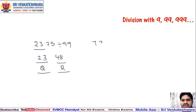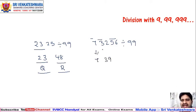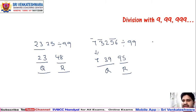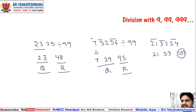For 73256 divided by 99, take two digits from the last: 56, 32, and 7 remaining. Write 7, then 7 plus 32 is 39, and 39 plus 56 is 95. Since 95 is below 99, the coefficient is 7 and the remainder is 95. For 213254 divided by 99: groups are 54, 32, 21. Write 21, 21 plus 32 is 53, 53 plus 54 is 107. Since 107 exceeds 99, divide once: 53 plus 1 gives 54. Coefficient is 2154 and remainder is 8.